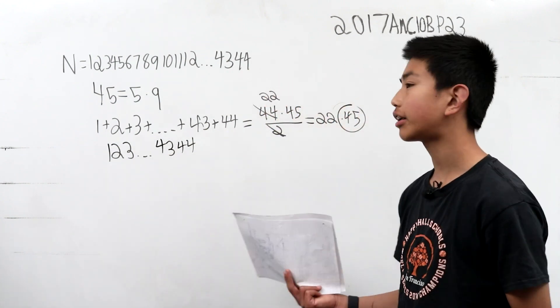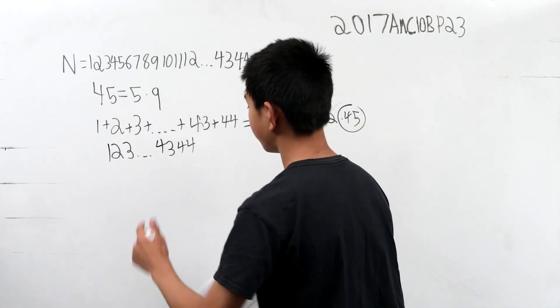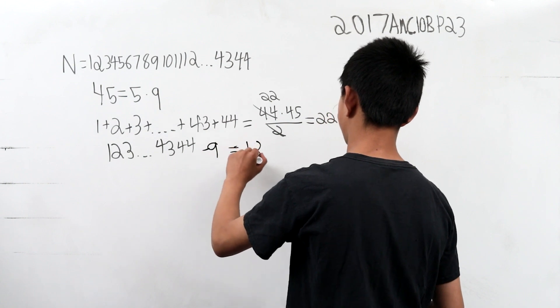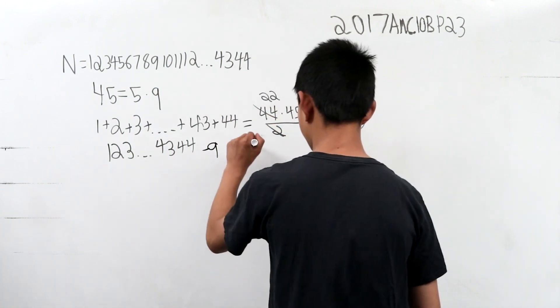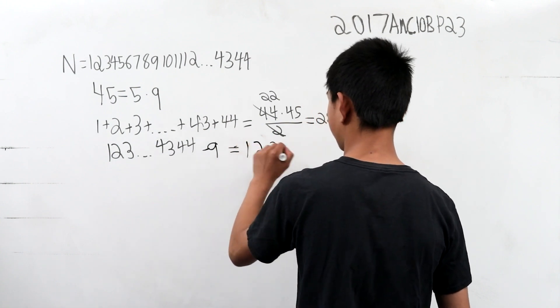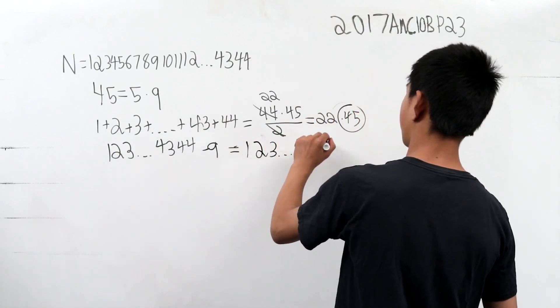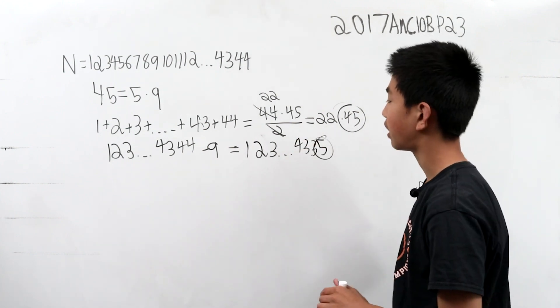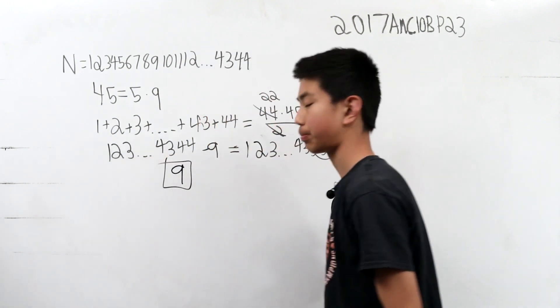So if we subtract just like our first 9, this is 1, 2, 3, dot, 43, 44. And we see that it ends in a 5, so it is divisible by 5. So therefore, our answer is going to be 9 for this problem.